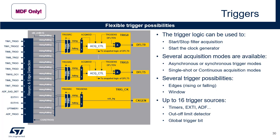This slide describes the triggers present in MDF. Each digital filter and the clock generator have their own trigger block. The trigger blocks are used to start and stop the acquisition of main digital filters or to start the generation of the MDF CCK10 clocks. Possible trigger sources are 14 signals from other circuit blocks, various timers, LP timer 1, ADF, EXTI. These trigger sources are common to all trigger blocks. One common internal signal TRGO, one dedicated internal signal — each OLD block can trigger the main filter. Several acquisition modes are available for the digital filters: asynchronous or synchronous triggered modes and single shot or continuous acquisition modes. Several trigger possibilities: edges, rising or falling, and window.